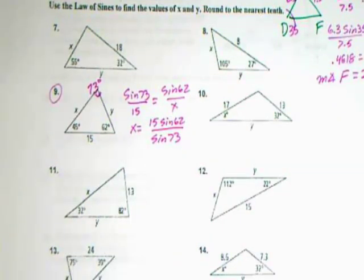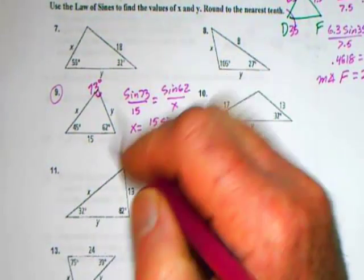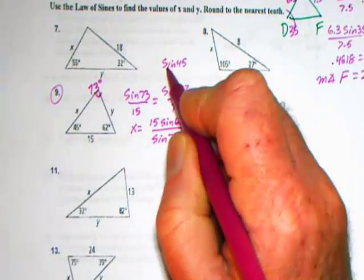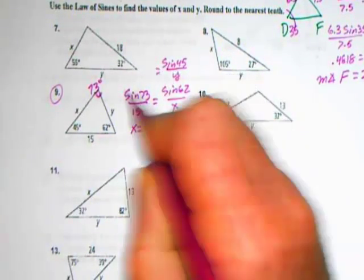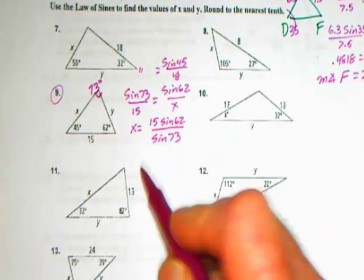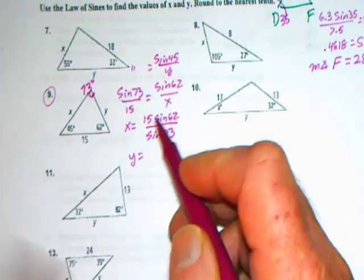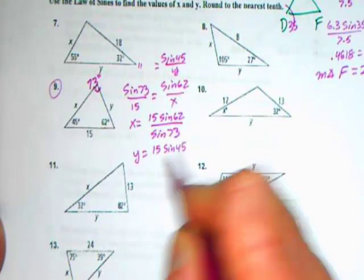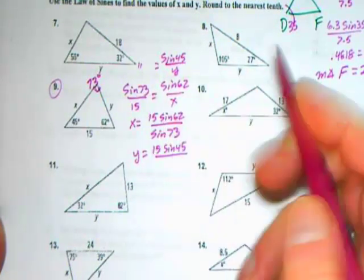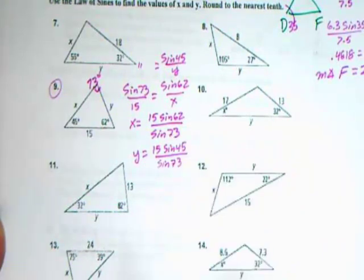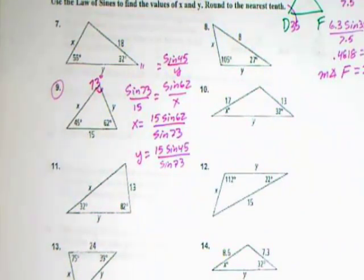x is going to be equal to 15 sine 62 divided by sine 73. Let's go ahead and go for y while we're at it. The ratio that goes with y is going to be sine 45 over y. When we cross multiply for this one, we're going to get y equals 15 sine 45 divided by sine 73.